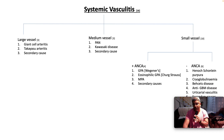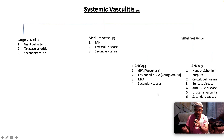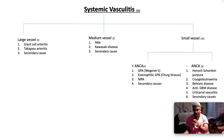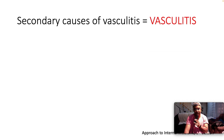Small vessel vasculitic syndromes which are ANCA-negative include: Henoch-Schönlein purpura, cryoglobulinemia, Behçet's disease — which causes oral and genital mucosal ulceration — anti-glomerular basement membrane disease, sometimes called Goodpasture syndrome, which gives you haemoptysis together with hematuria, then urticarial vasculitis, and a whole host of secondary causes.